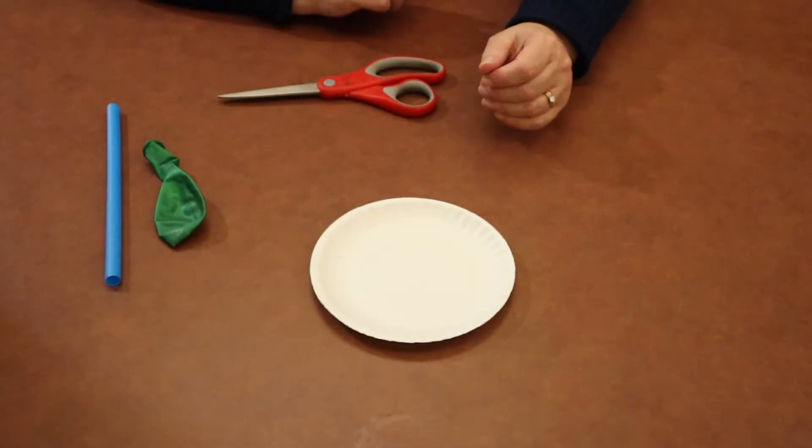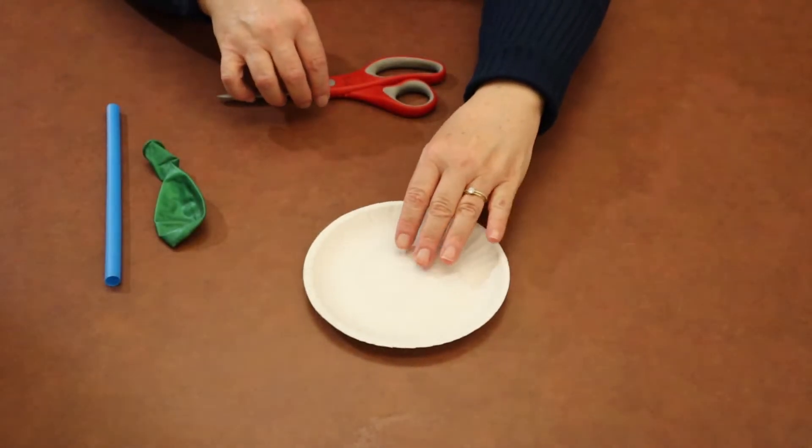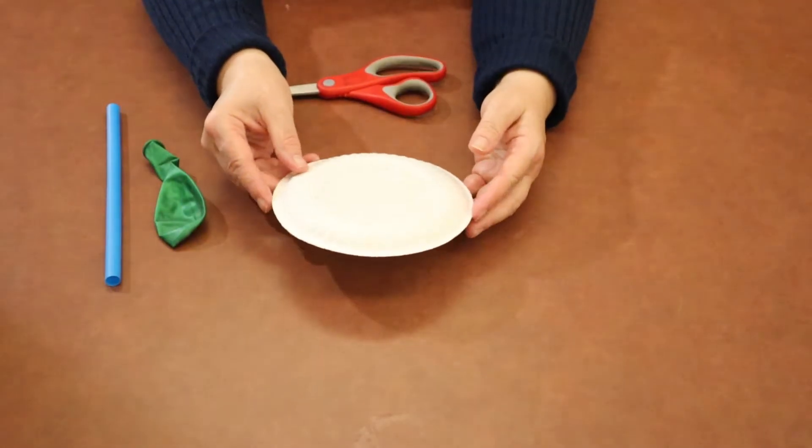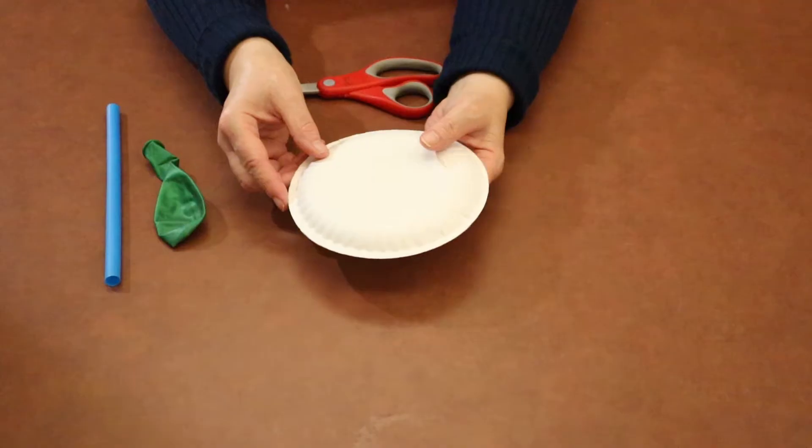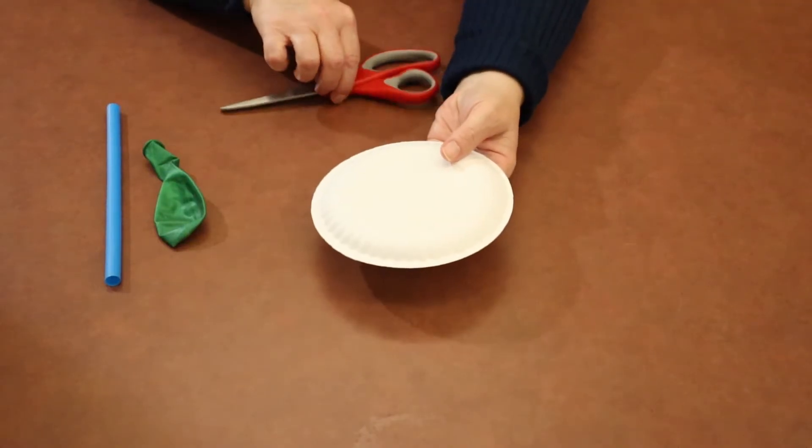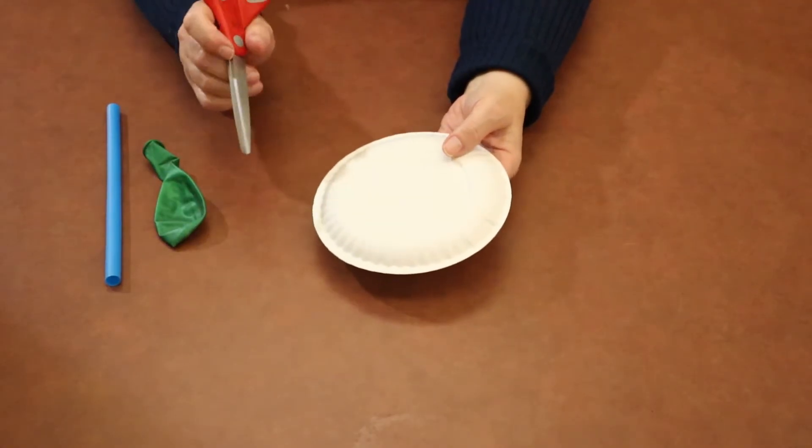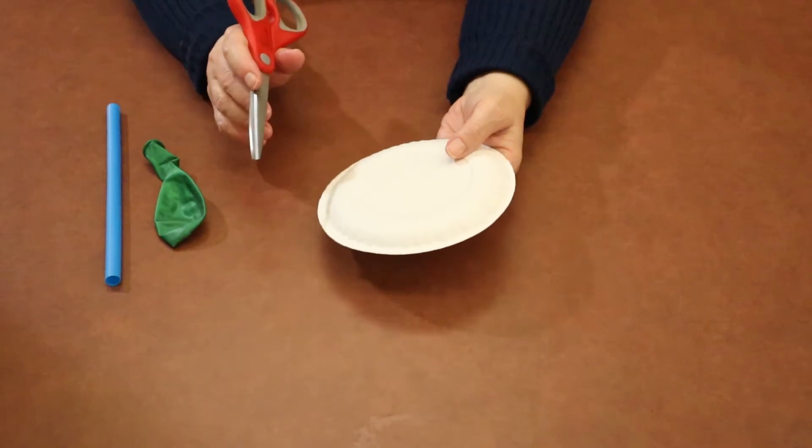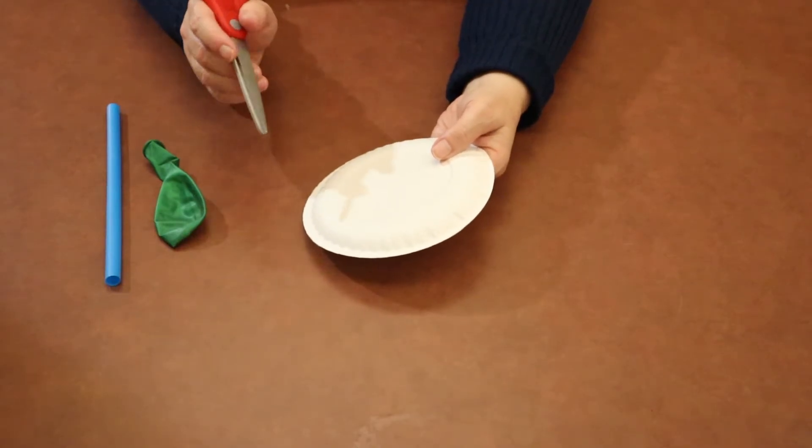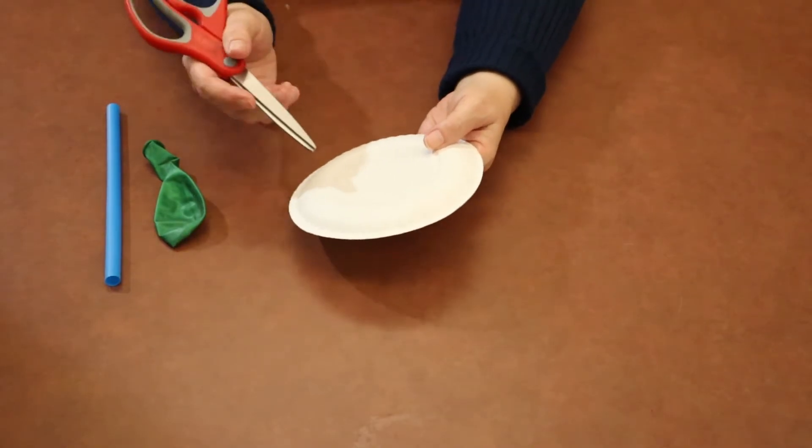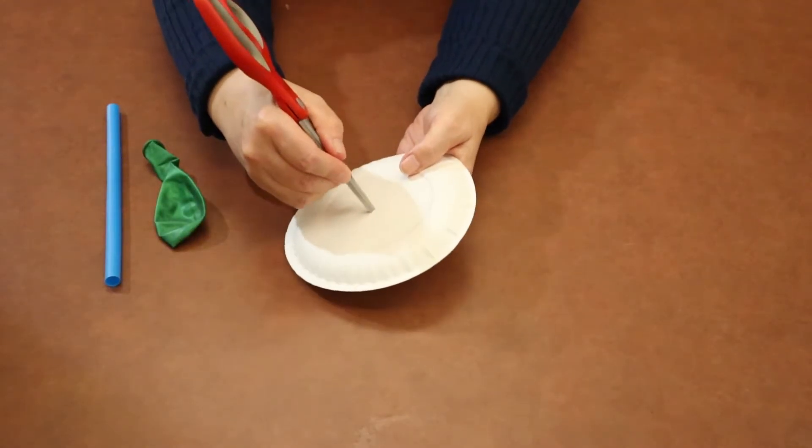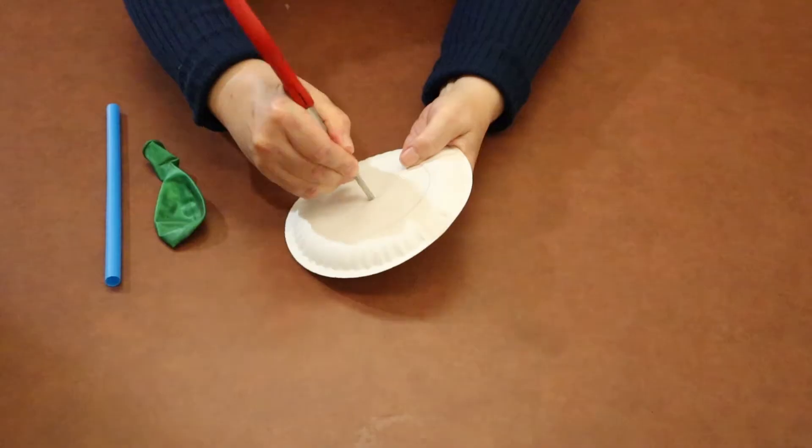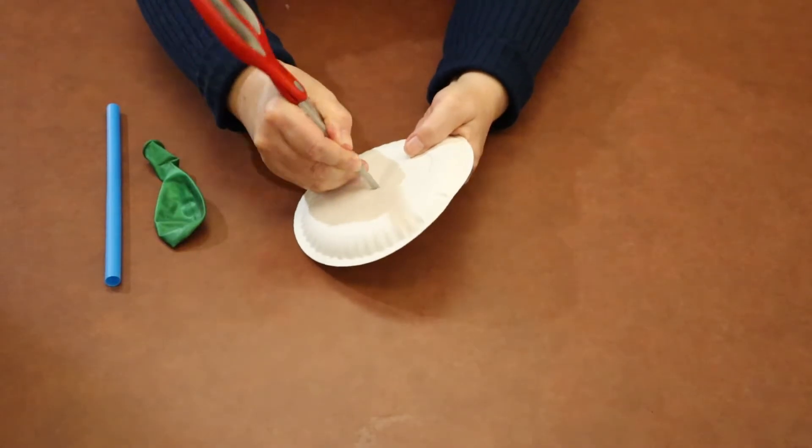For our first step, we're going to poke a hole in the paper plate. For our project today, we're going to be using the smaller of the plates that's in your bag. Take your paper plate and a pair of scissors, and in the center of the plate, poke a nice size hole in the middle of the plate.